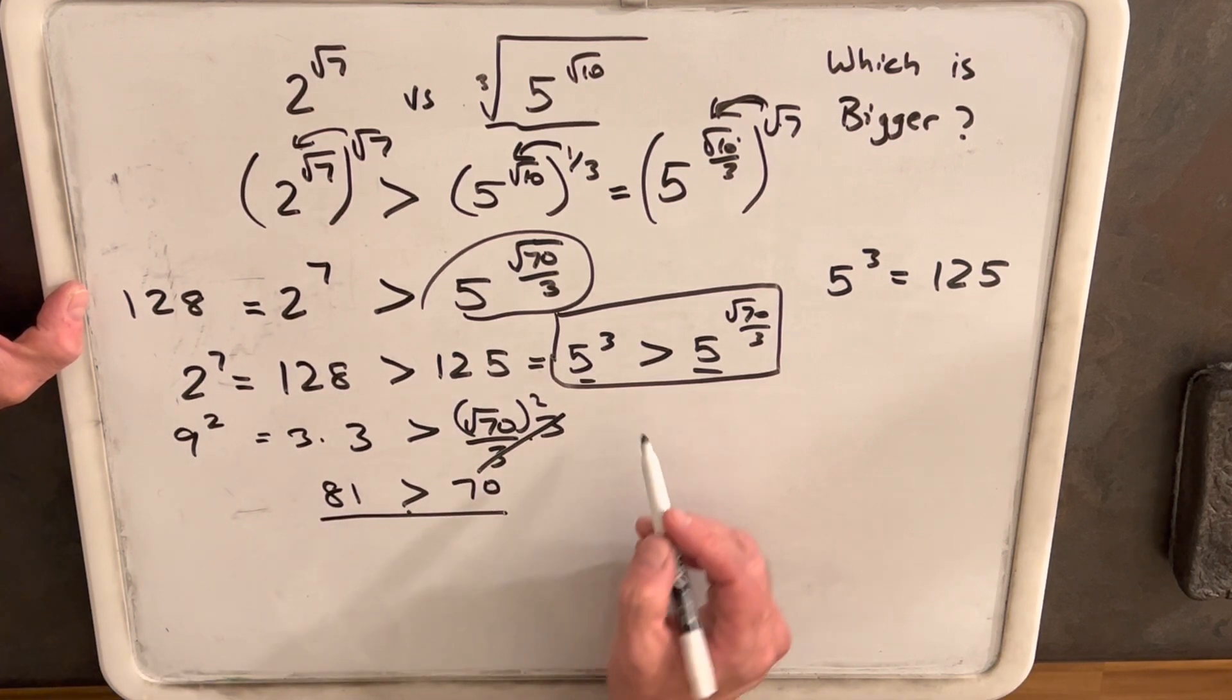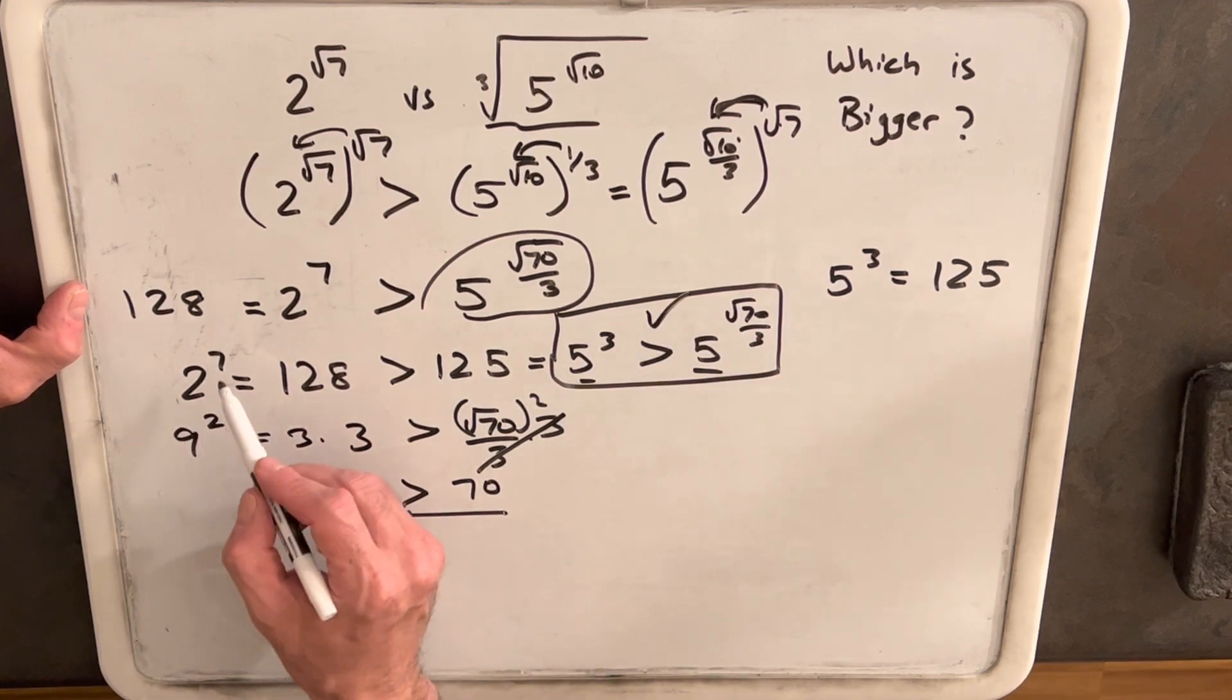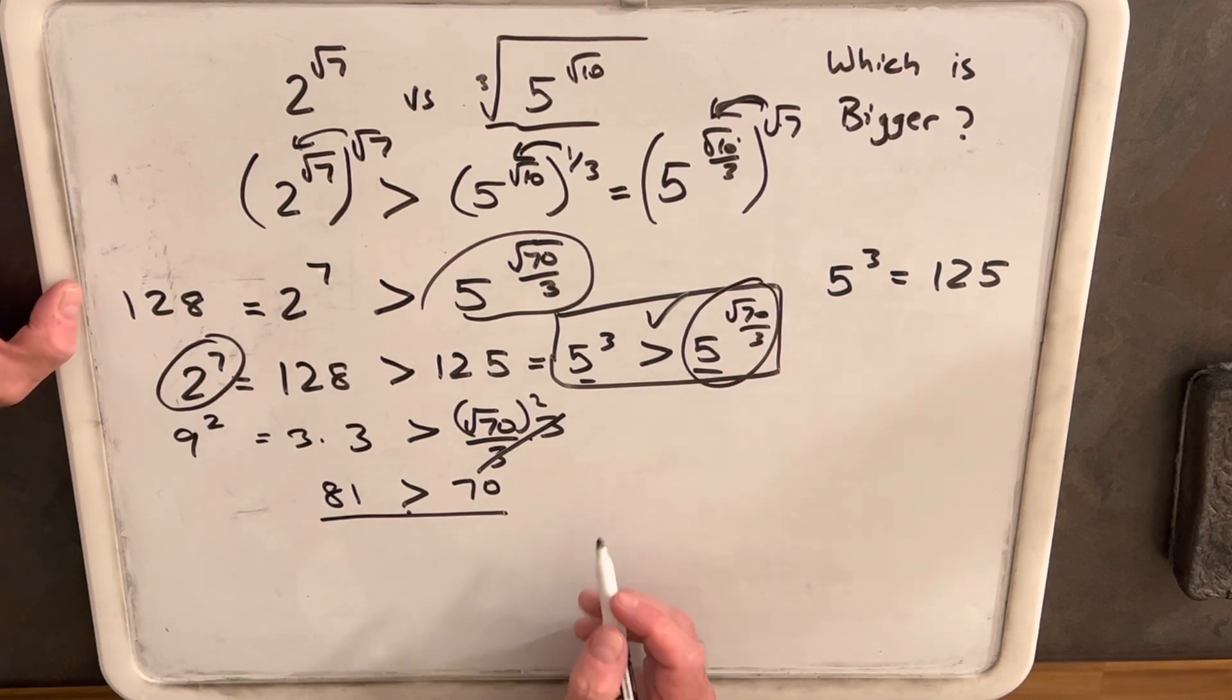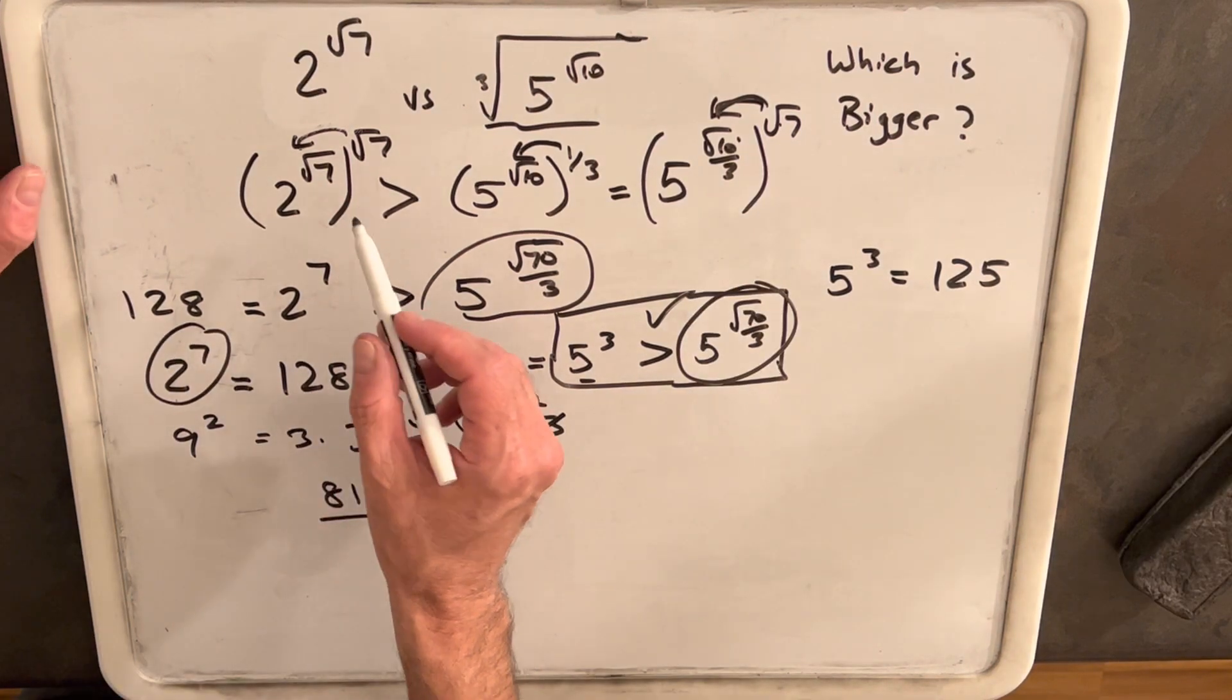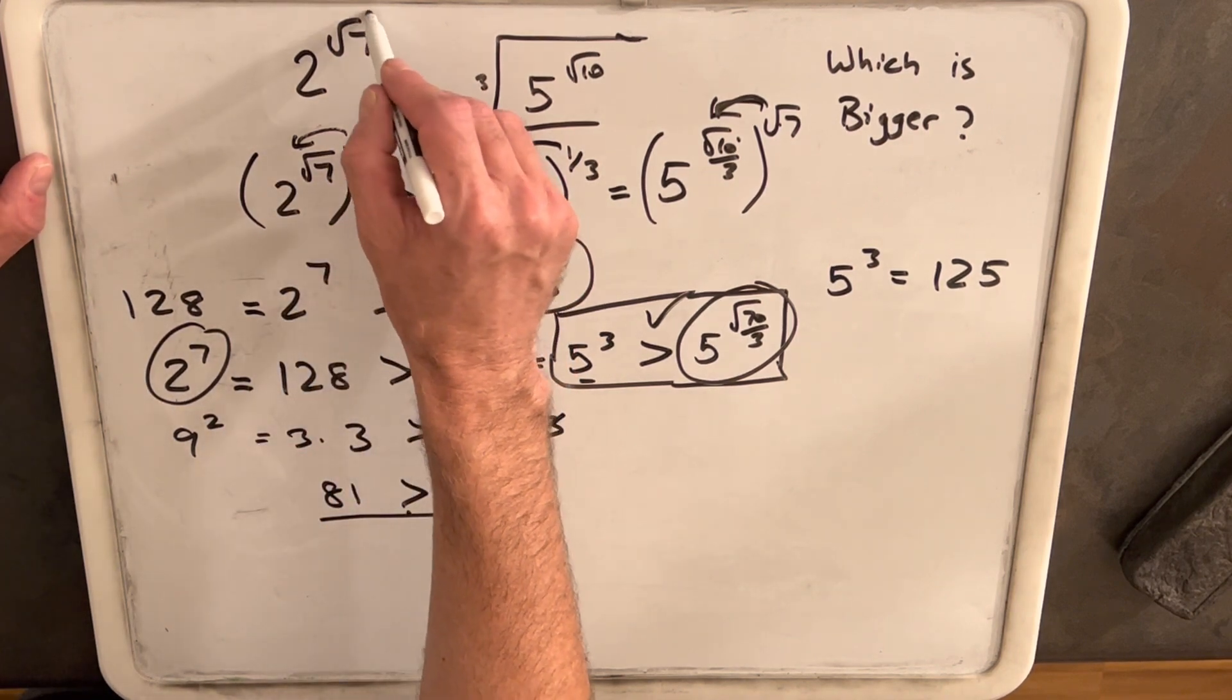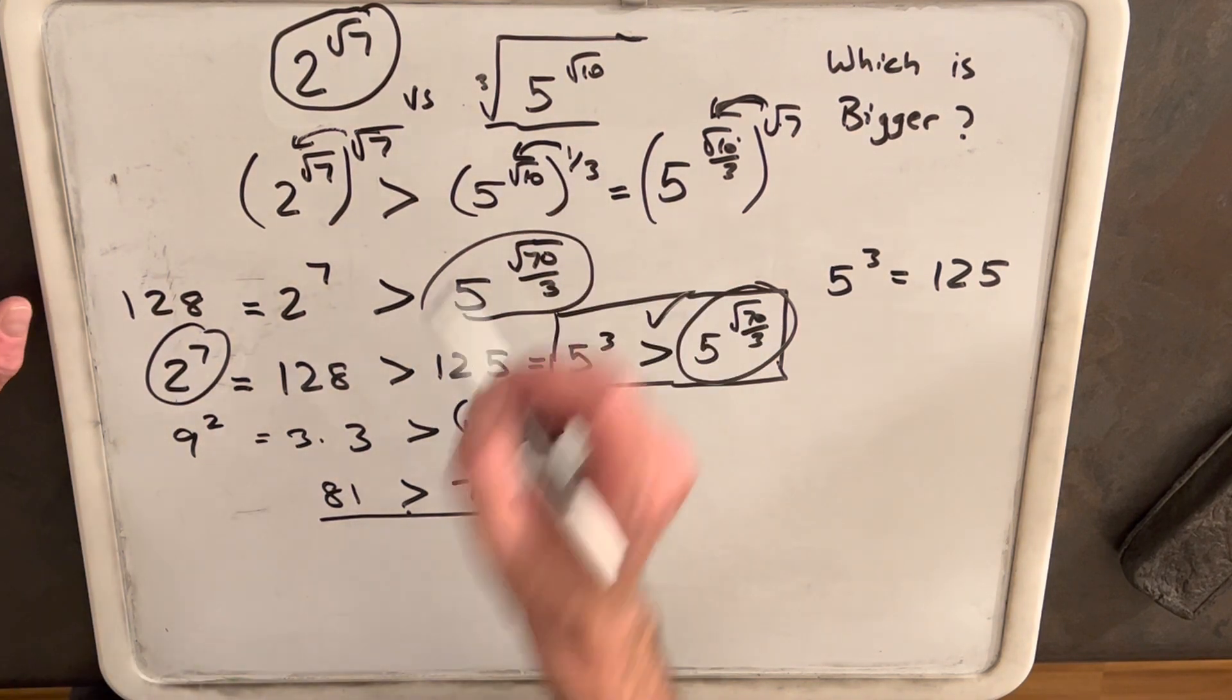And so if that's true, then this piece right here must be true. And so then 2 to the 7th is going to be greater than 5 square root of 70 over 3. Then all we did to get to that point was raise everything to the square root of 7. So that means that our original statement, 2 to the square root of 7th, must be greater than the cube root of 5 to the square root of 10.